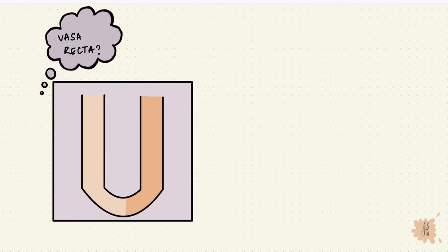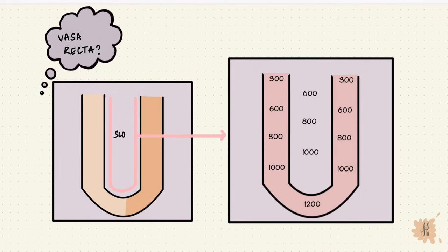That's the loop of Henle. But where's the vasa recta in all of this? The blood flow to the medulla is important. The flow is low and slow, and that ensures the uptake of solutes into the bloodstream is slow, so the medullary hypertonicity stays. The vasa recta is like a circulatory connection between the cortex and the medulla.